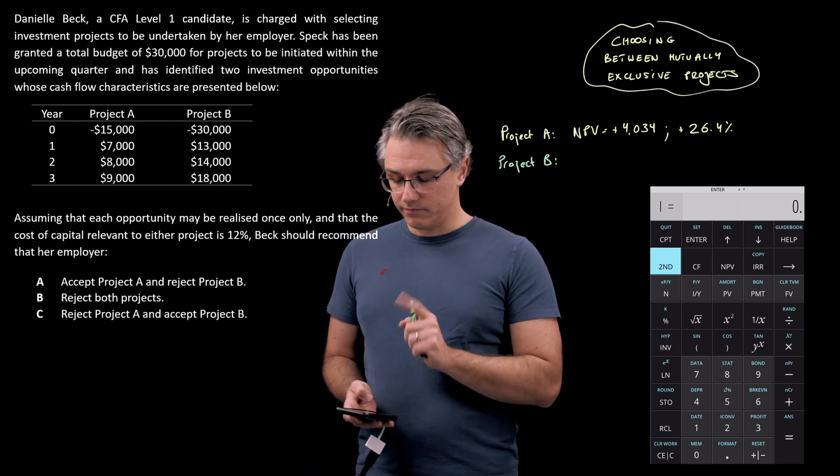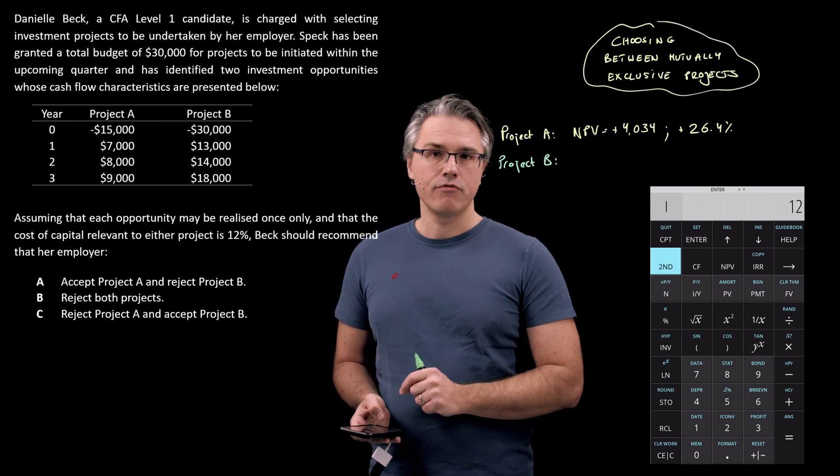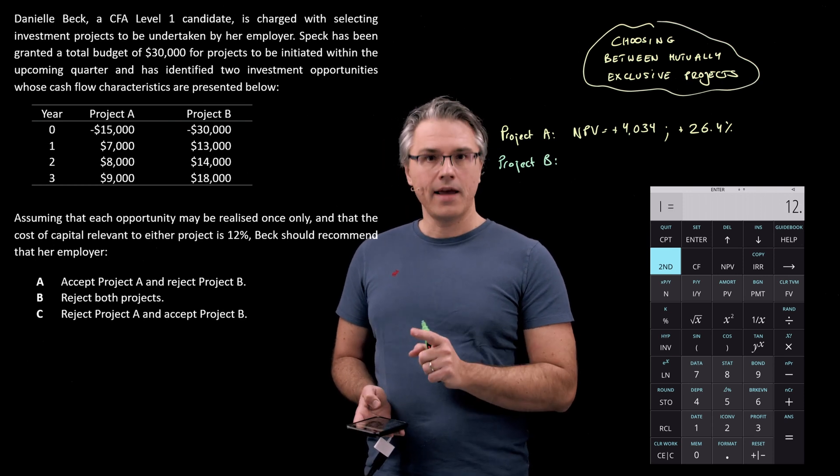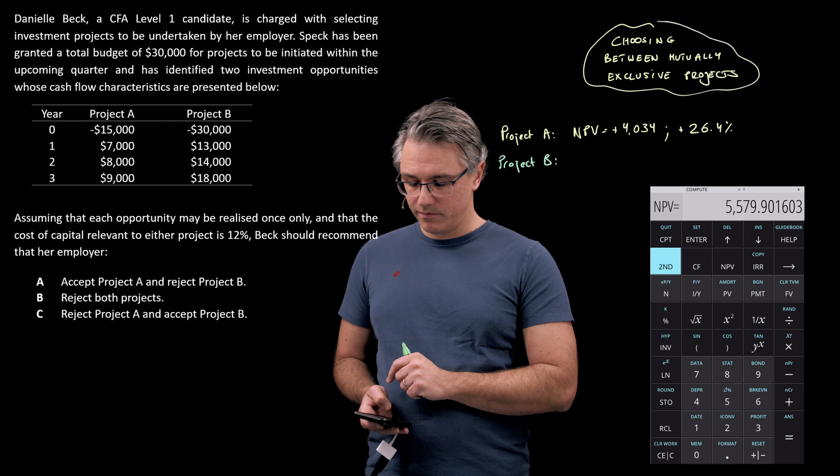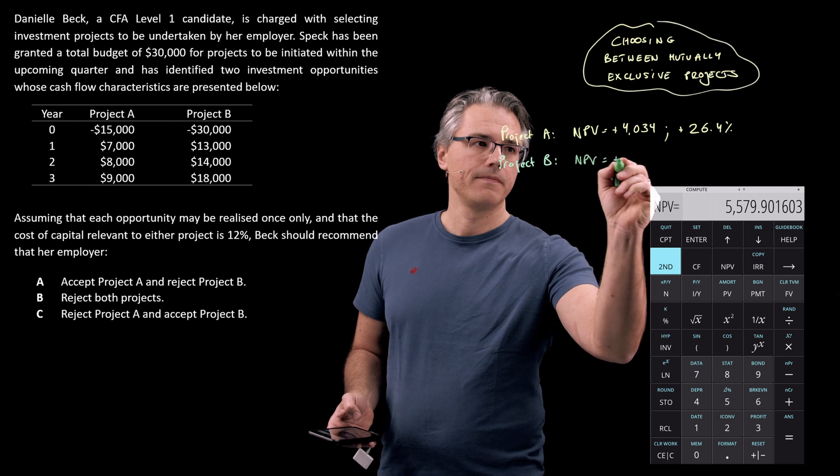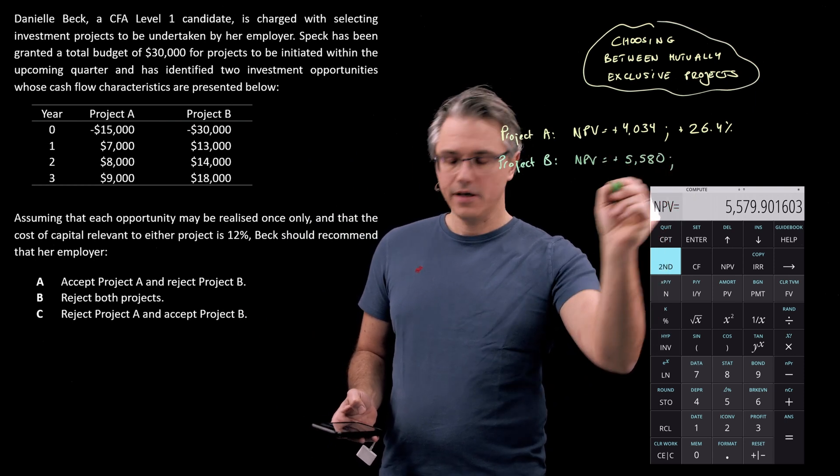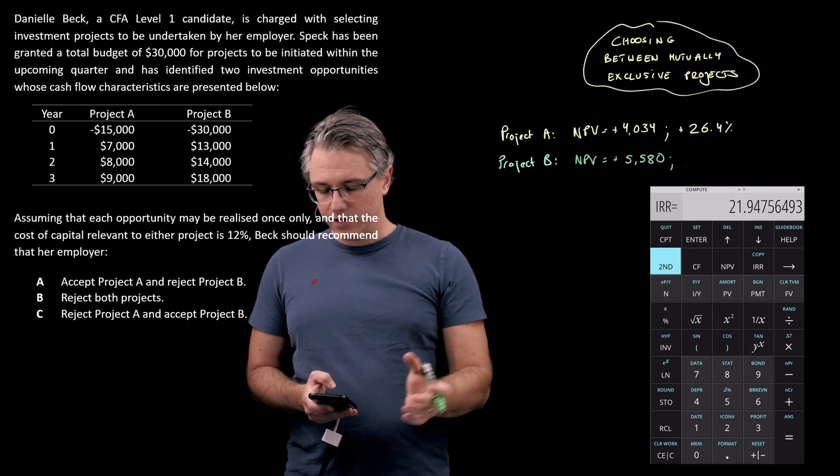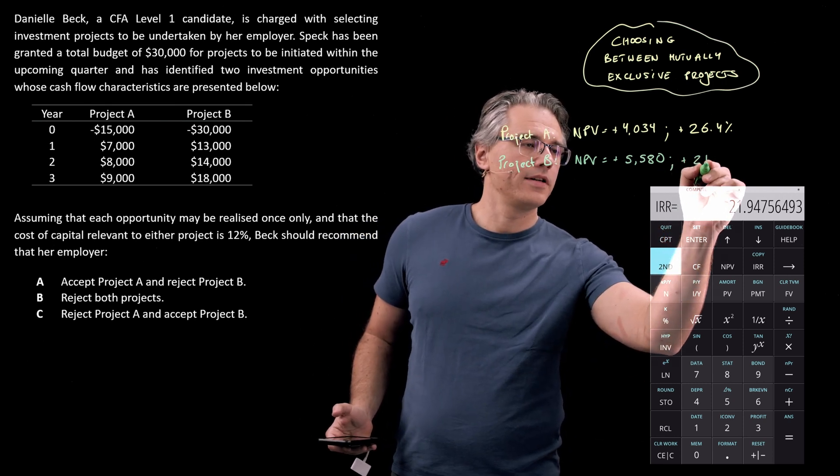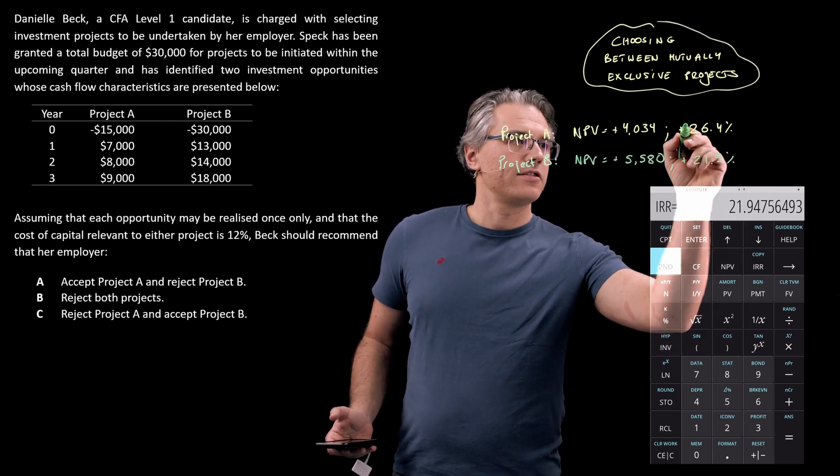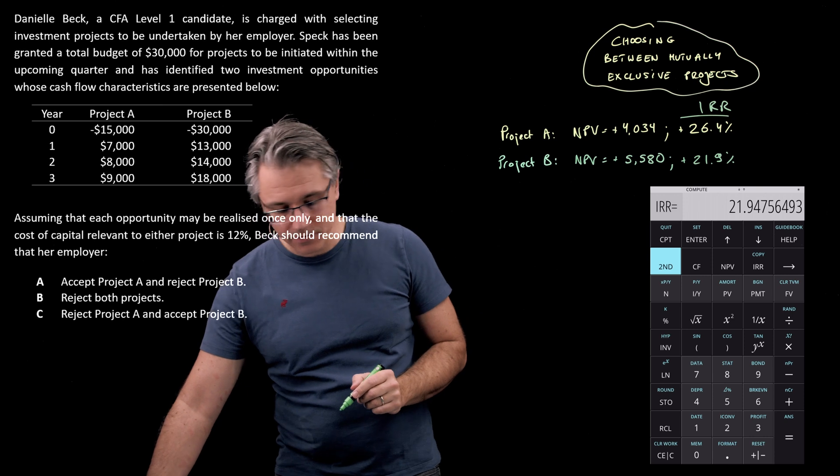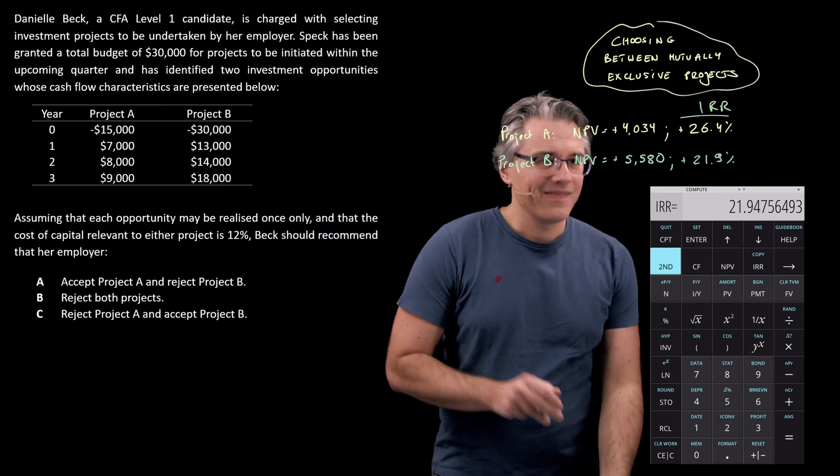So jump next door to NPV. Press—well, not press compute—provide it with the rate of return which is the cost of capital here, press enter to confirm your input, down arrow once, now compute. As you can see this is 5,580 approximately, it's positive which is a good sign. And the IRR is going to be, well, 21.9, quite high but not as good as the previous one. So let's just make sure we know that these are the IRRs because I didn't really label them properly. I did label the NPV.